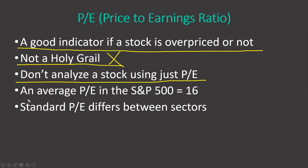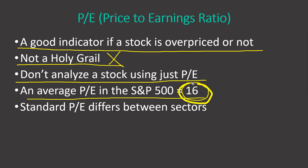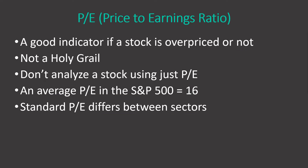The average P/E in the S&P 500 index is currently around 16. But this is the average — there are companies and sectors which are way above it and way below it. This is just a middle ground. Standard P/E differs between sectors, and that's what I want to talk about now.